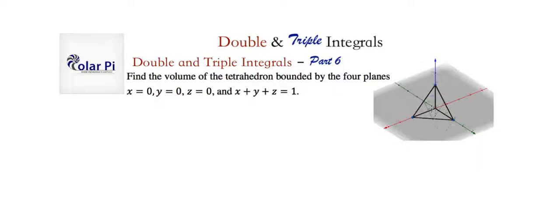Quick reminder, the red axis is the x-axis, green axis is the y-axis, blue axis is the z-axis. Our tetrahedron has four faces: three congruent right triangles make the left face, right face, and the bottom face, and the front face is an equilateral triangle defined by the plane x plus y plus z equals 1.